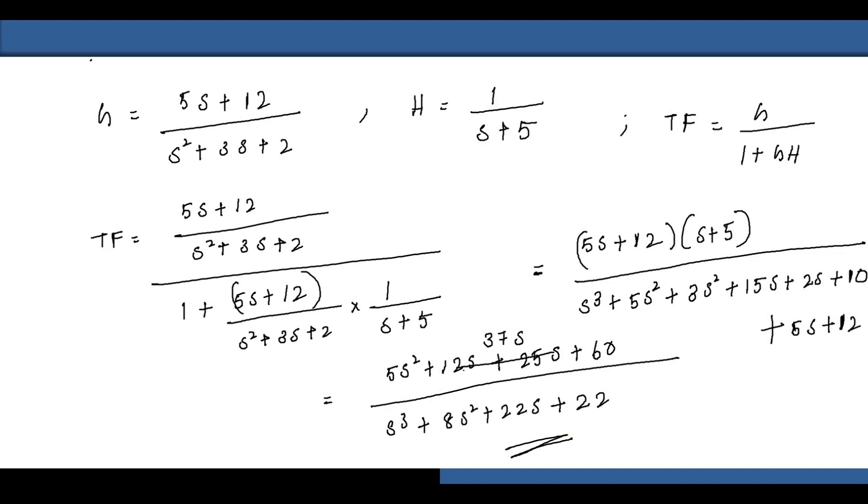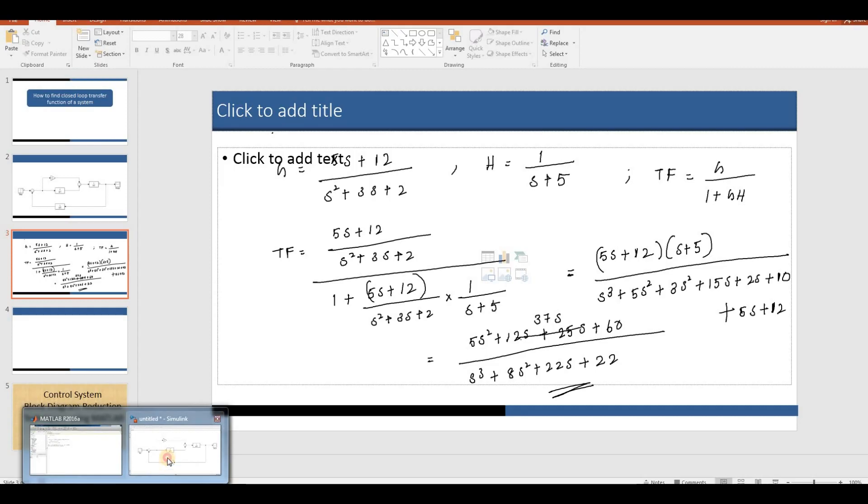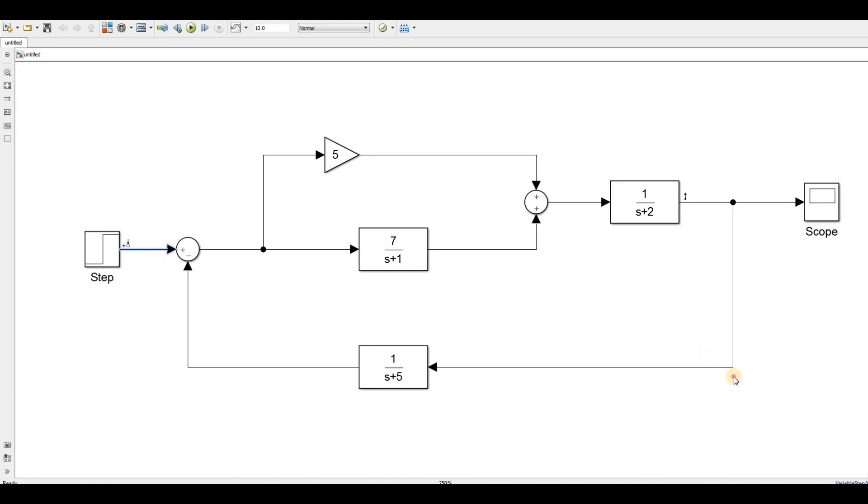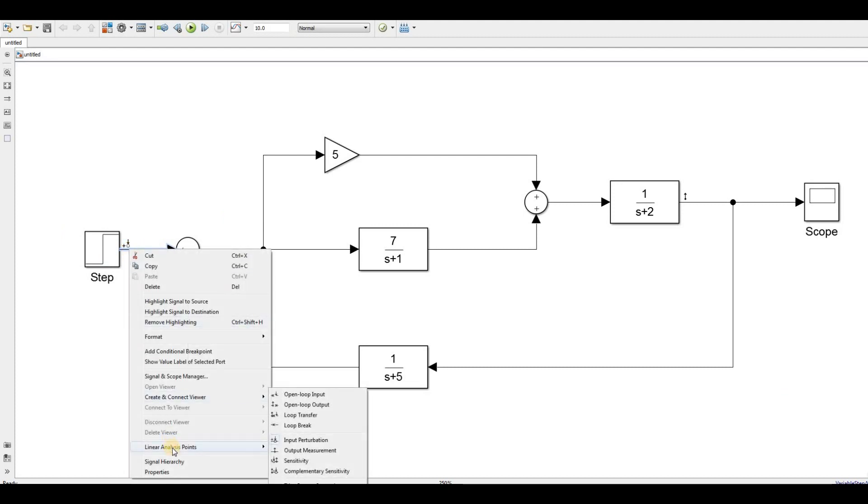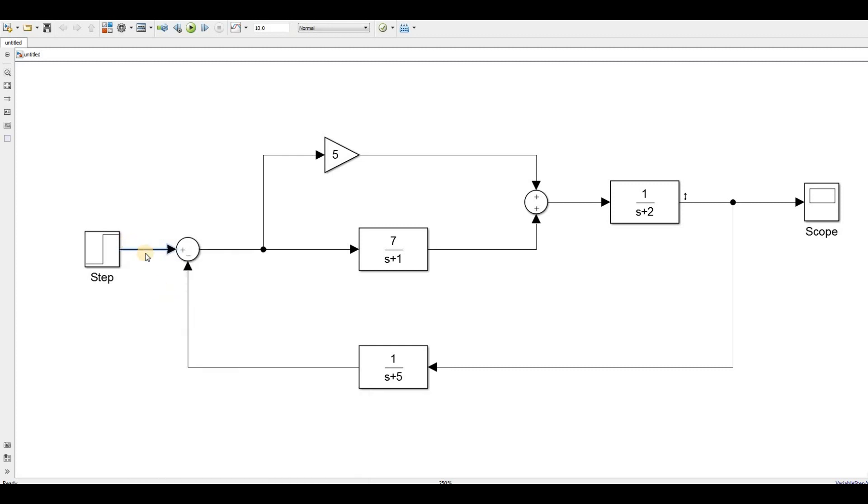Let's move to MATLAB Simulink and obtain the transfer function. This is the Simulink block diagram. Go to the input side, right click, select Linear Analysis Point and select Input Perturbation.